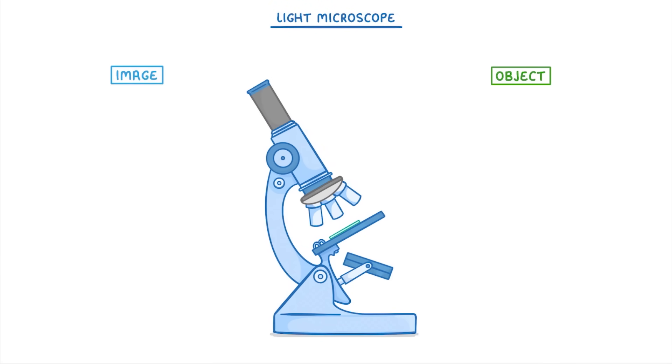Now before we go any further we need to introduce the terms object and image. In microscopy the term object refers to the real object or sample that you're looking at. So if we had some onion cells on our microscope slide then the onion cells themselves would be the object.